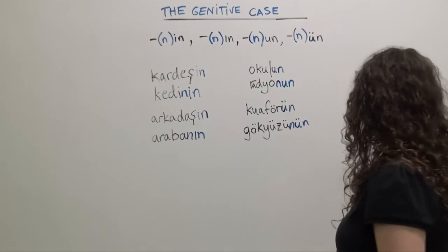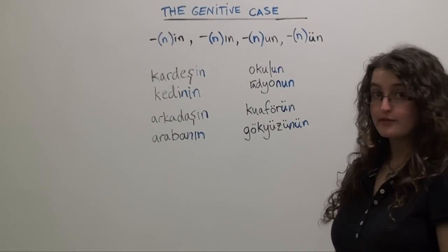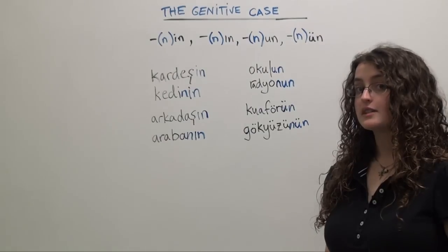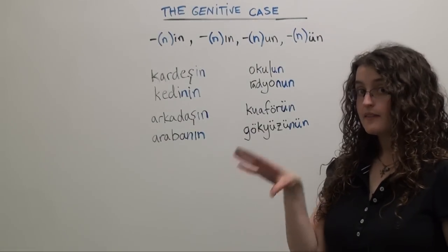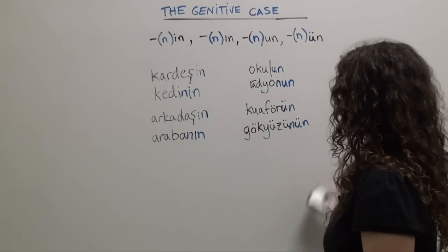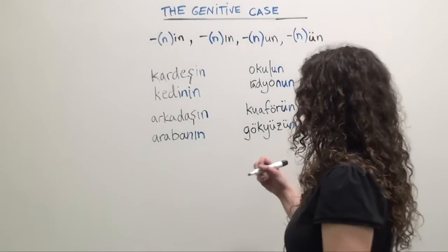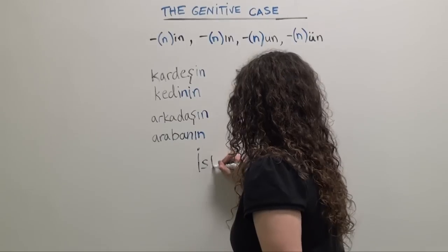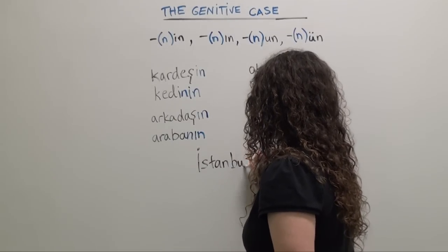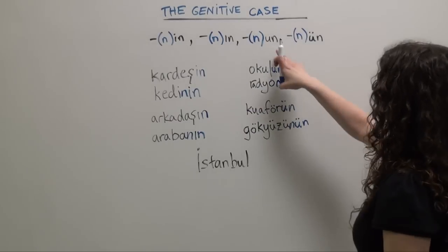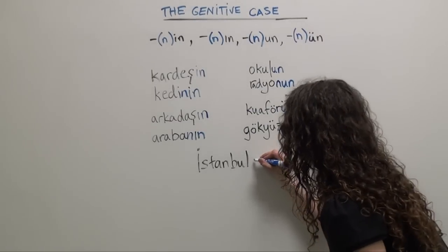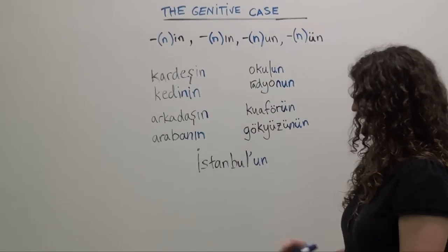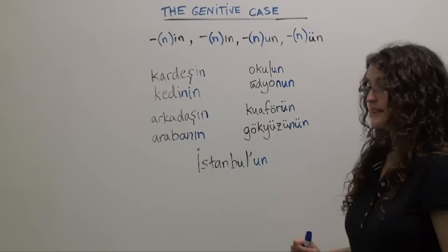One final note: if you're adding the genitive case to a proper noun — like the name of a person or a city — you're going to need to use an apostrophe to separate the noun from the genitive case ending. For example, if you want to say 'of Istanbul,' start with İstanbul. According to vowel harmony, we choose 'un' as our genitive case ending, but because İstanbul is a proper noun, we add an apostrophe, giving us İstanbul'un — 'of the city of Istanbul.'